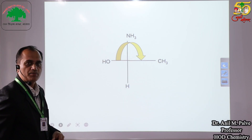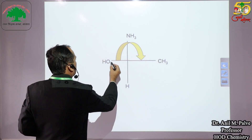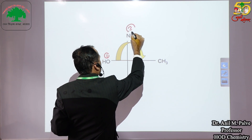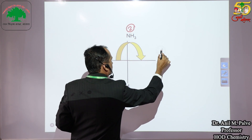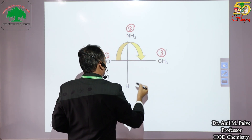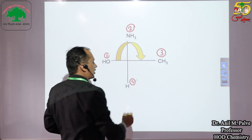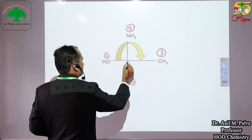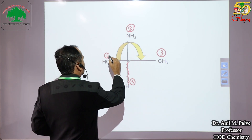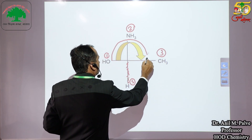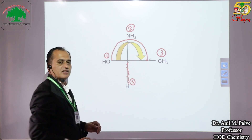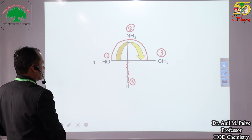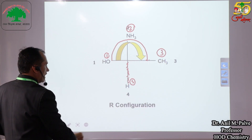Now let us have another example. In this case, the priority for OH is 1. After that, nitrogen has atomic number 7, so it gets second priority. Then carbon has atomic number 6, so priority number 3. And hydrogen has atomic number 1, so priority is 4. The fourth group is away from us, shown by a dash bond. Tracing from priority 1 to 3 gives a clockwise direction. Therefore, the configuration for this compound is R configuration.